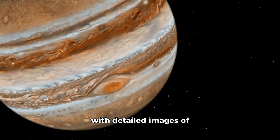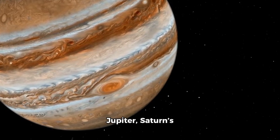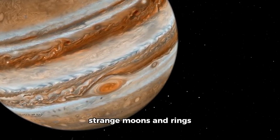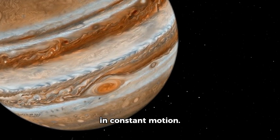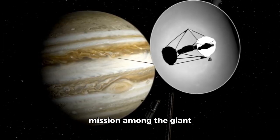It astonished everyone with detailed images of Jupiter, Saturn's massive storms, and strange moons and rings in constant motion. After completing its mission among the giant planets, Voyager 1 pushed farther into space.